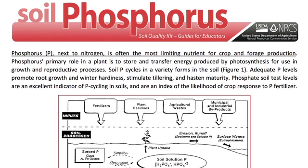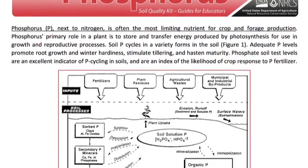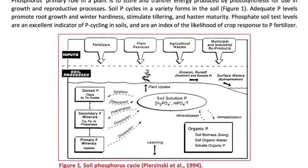It plays a primary role in storing and transferring energy from photosynthesis. We have a simple phosphorus cycle, figure one from Pierczynski, that's important to go over so they understand the different inputs and sources of phosphorus. Once fertilizer is applied, it can either be taken up or tied up with clays, secondary minerals, or primary minerals, and also the soil mineralization that can occur from organic P in those different pools.